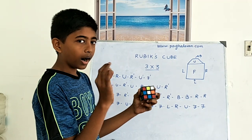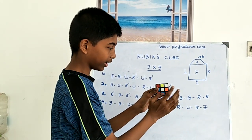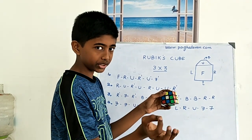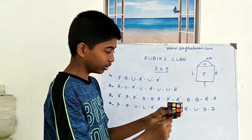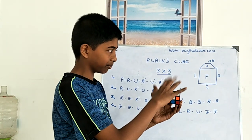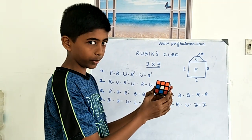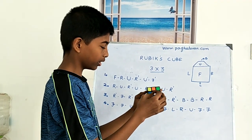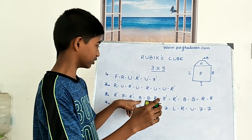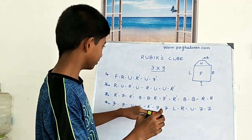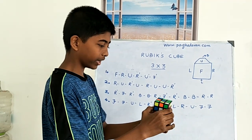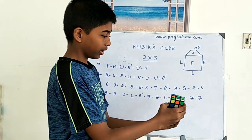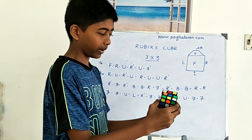Now R dash, R. Front right side is F, R is the same as R. Now U — U is the same as F, U prime is the same as F. Back, B dash — B is the same as F. Back side is back, back dash.